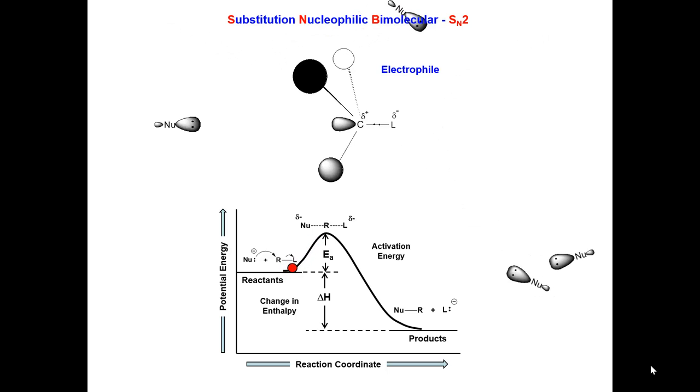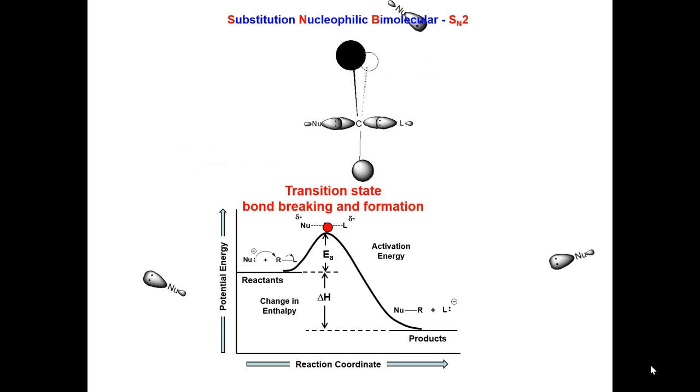There is an orbital at the backside of the carbon-leaving group sigma bond that will accept the electrons from the nucleophile, and as the bond forms, the alkyl groups are pushed backwards. At the same time, the carbon-leaving group sigma bond starts to break.